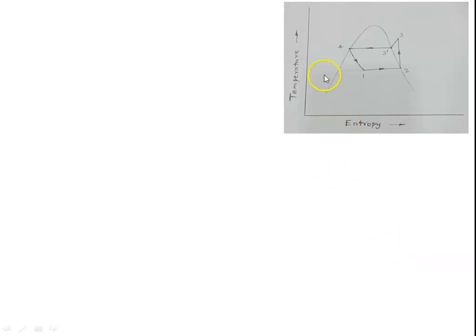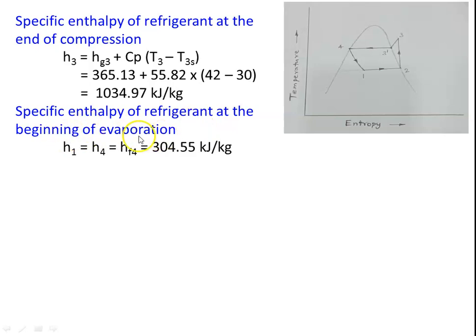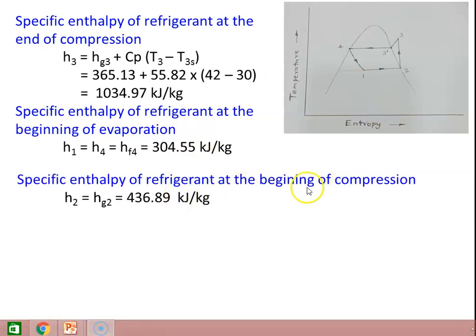The cycle and various processes are shown here. Point 2 is the saturated vapor before compression, point 4 is the saturated liquid after condensation, and point 3 is the superheated vapor after compression. The specific enthalpy at the end of compression: H3 = Hg3 + Cp × (T3 - T3s) = 365.13 + 155.82 × (42 - 30) = 1034.97 kJ/kg. H1 = H4 = Hf4 = 304.55 kJ/kg. H2 = Hg2 = 436.89 kJ/kg (saturated vapor).